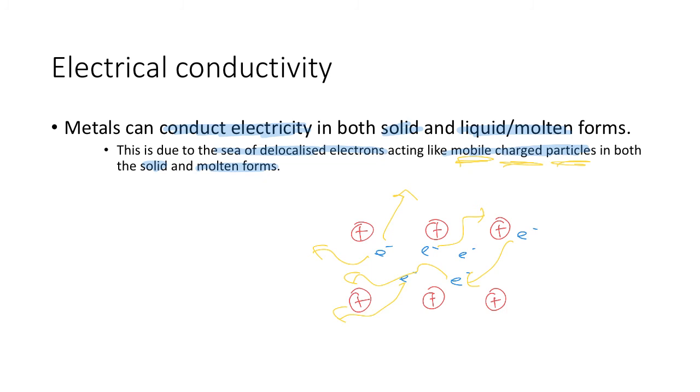That's in solid form. When you get into molten form, these ions also have the ability to move around. So those can move around just like any liquid can, and because they're moving around as well, they can also act as mobile charged particles.